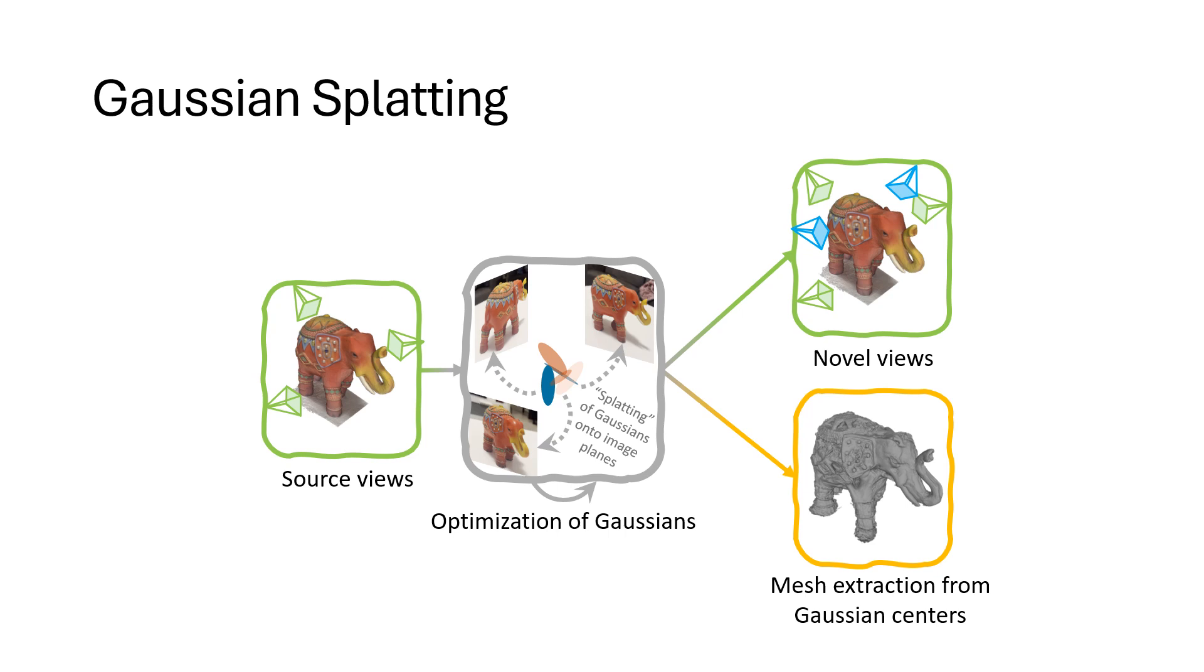Concurrent methods have tried adding additional heuristic losses that improve the geometric consistency of the Gaussian locations. However, they still optimize per scene and occasionally produce unrealistic surfaces.